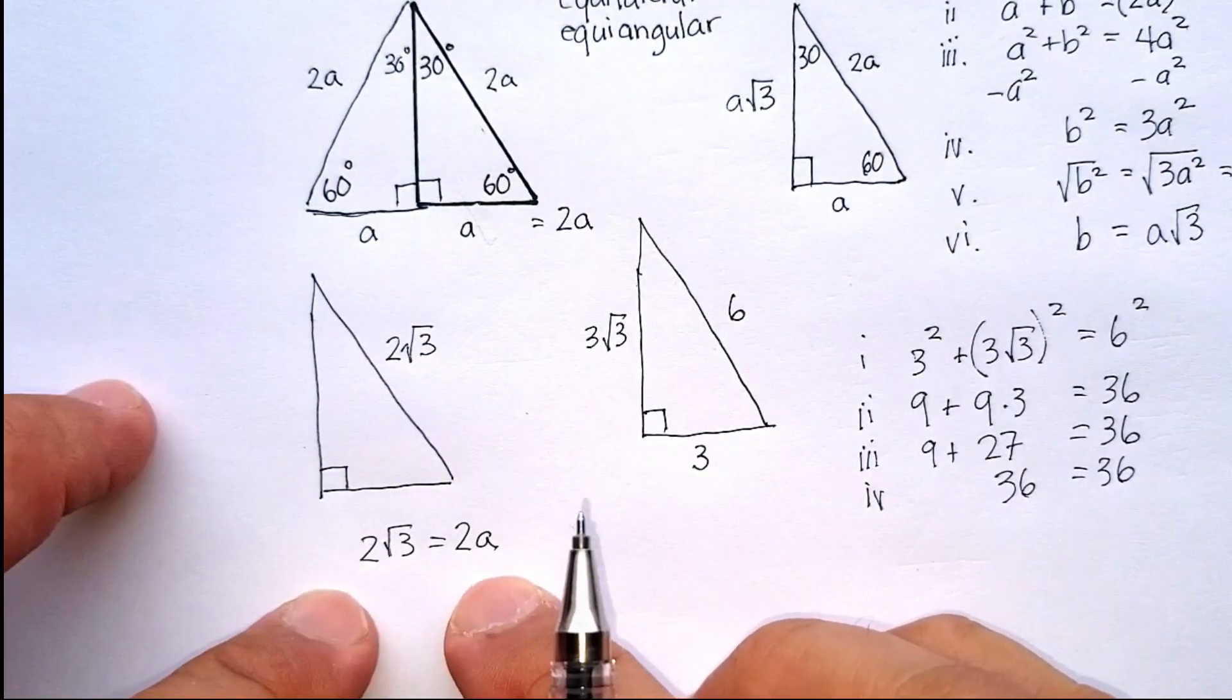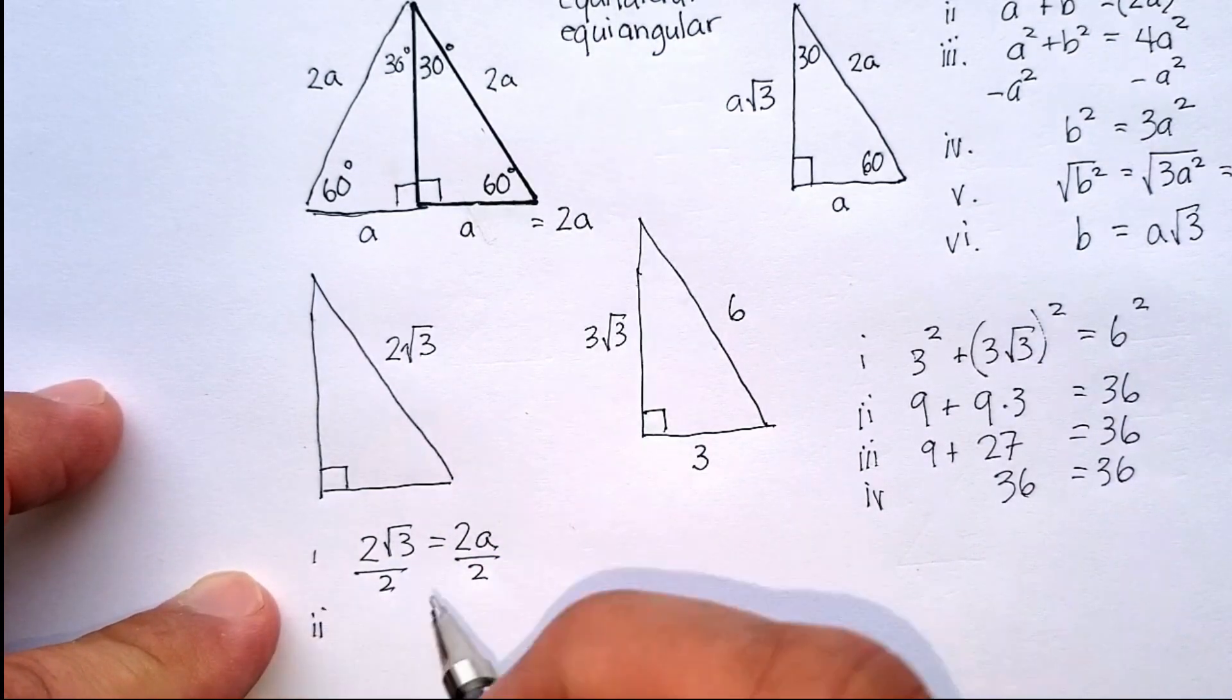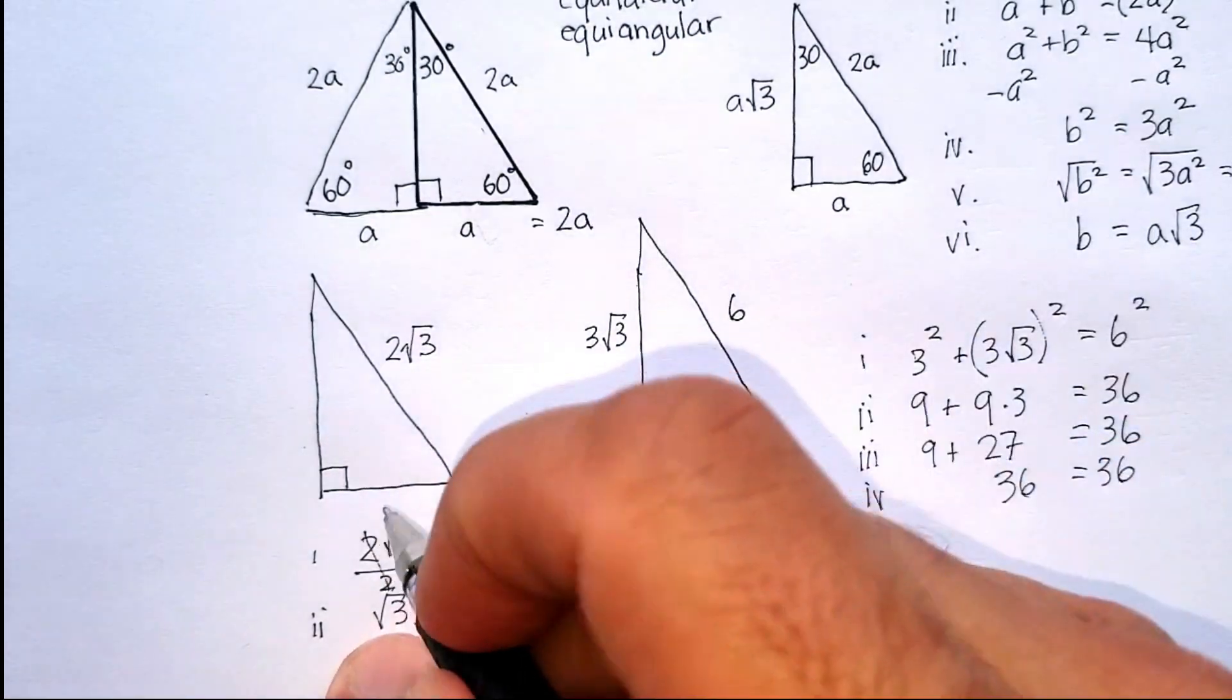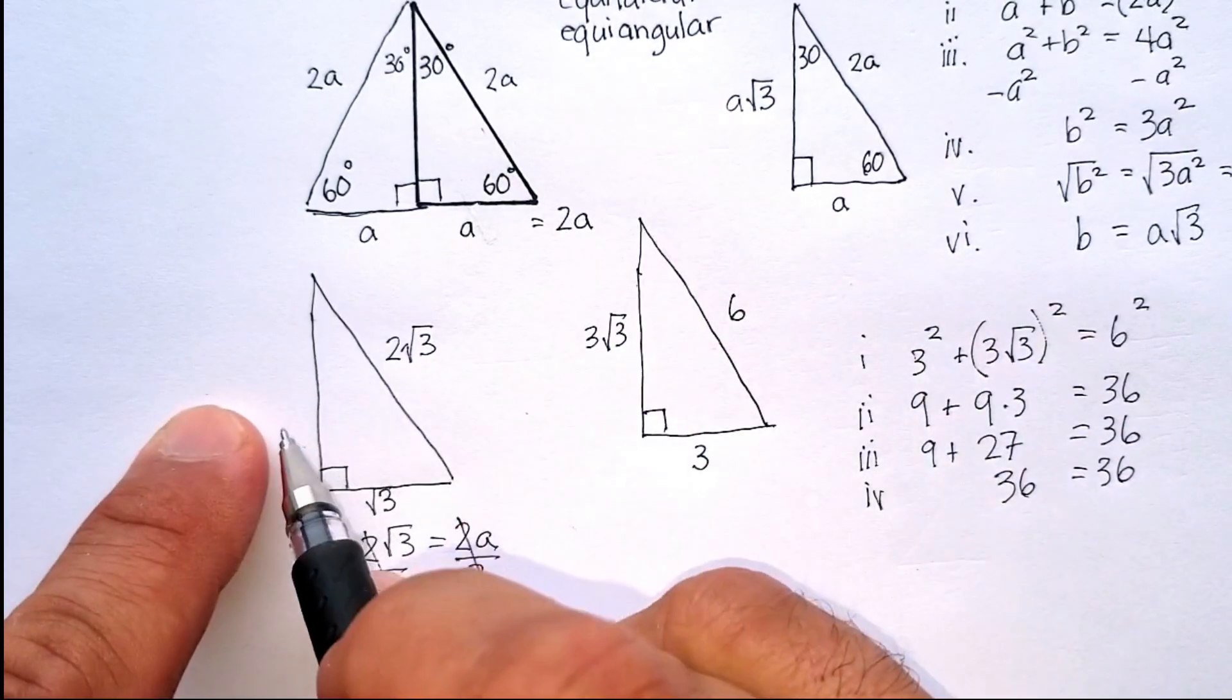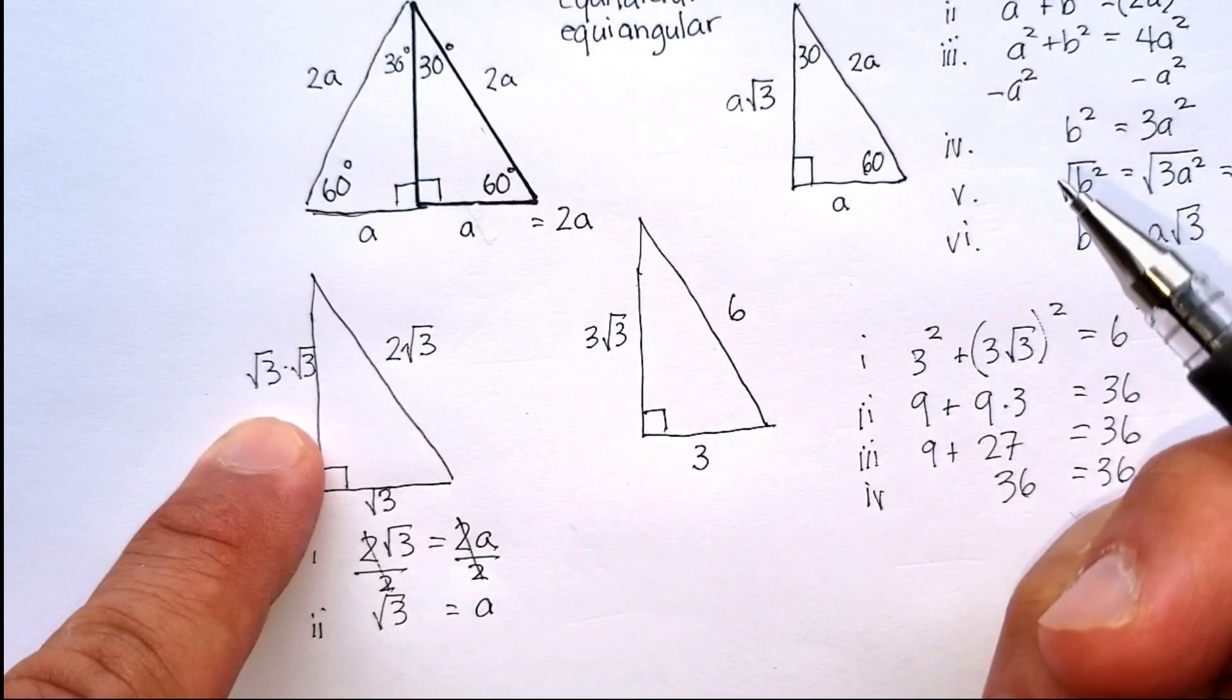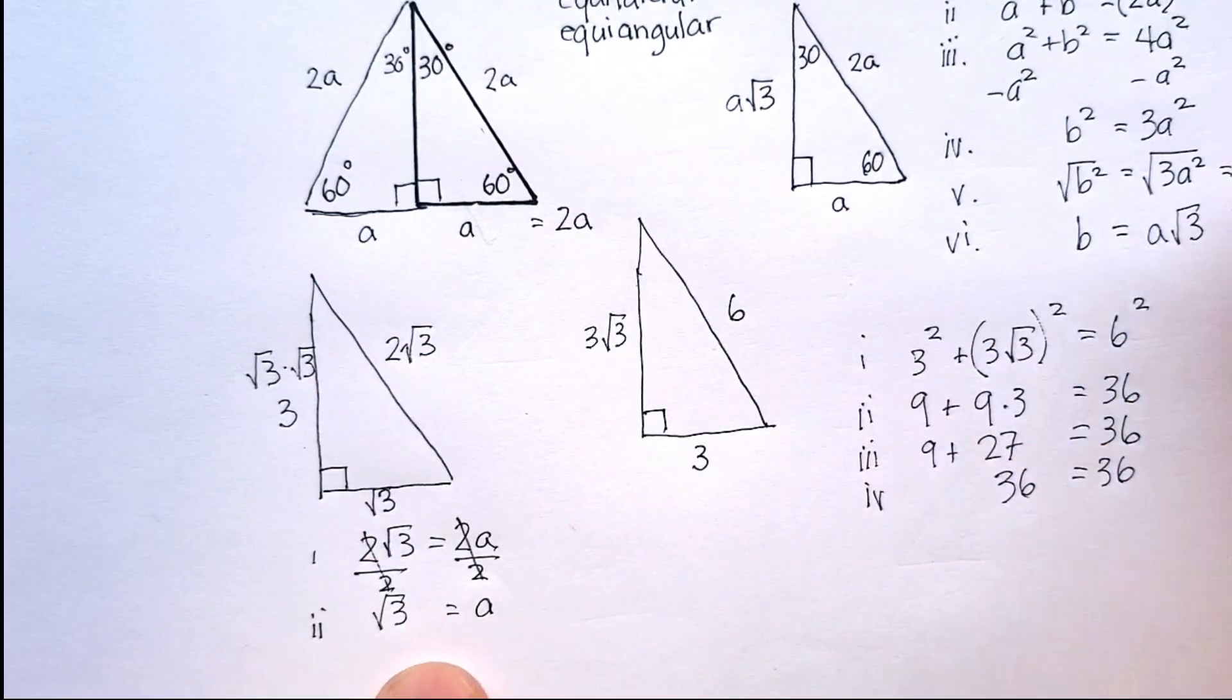Again, I'm solving for the a. So I'm going to divide both sides by 2. That goes away. I'm going to get a here. That goes away. So I'm going to get radical 3. That means that this side is radical 3. And that this side is radical 3, which is my a, times radical 3, which I know is just radical 3 squared, or simply 3. See how I did that? I hope that was helpful to you.